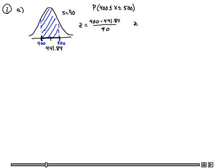The Z-score for the 400 is a negative 0.46. And the Z-score for the 500 is 0.65.